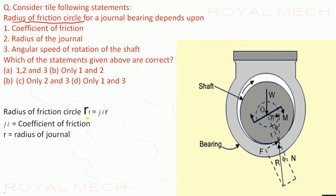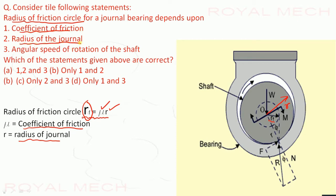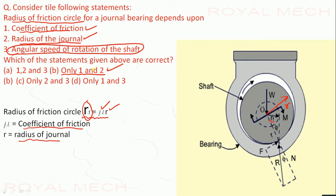The radius of friction circle is Rf = μ × R. The dotted line circle is called the radius of friction circle. It depends on the coefficient of friction μ and the radius of the journal R. It does not depend on the angular speed of rotation of the shaft. Therefore, 1 and 2 are correct — option B is the correct option.